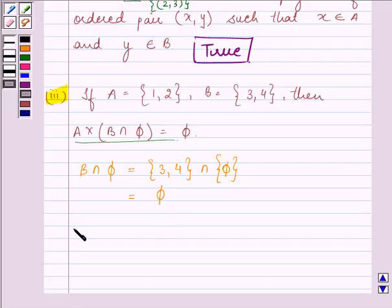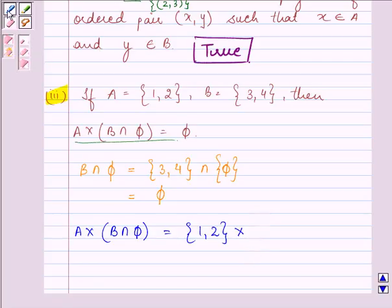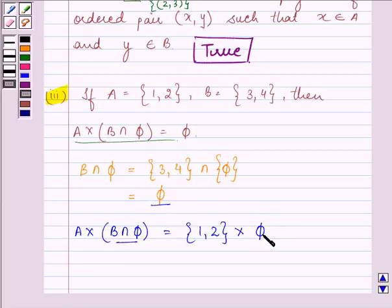And now A cross (B intersection phi) will be ordered pairs {1, 2} cross phi. Now we can write in place of B intersection phi, the answer that we obtained, phi. And hence our answer will be {1, 2} cross phi, which equals phi. So that means this is a true statement.